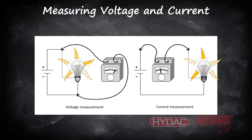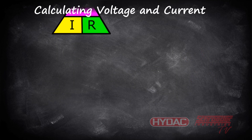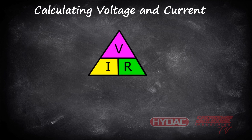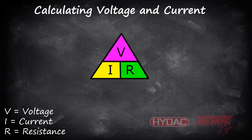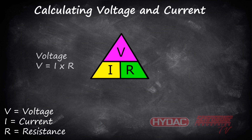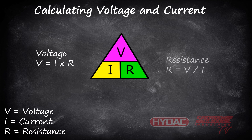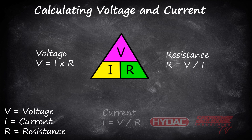The only way to measure the current flowing through a simple circuit is to insert your multimeter. Now, to talk about calculating voltage and current. In this simple Ohm's Law pyramid, V equals voltage, I equals current, and R equals resistance. To calculate voltage, all you need to know is I times R. To calculate resistance, all you need to know is V divided by I. And to calculate current, all you need to know is V divided by R.